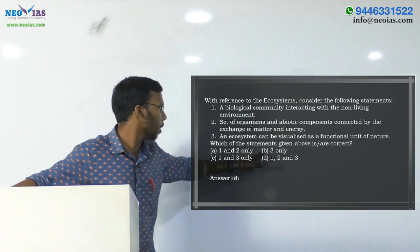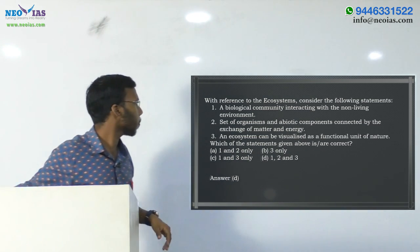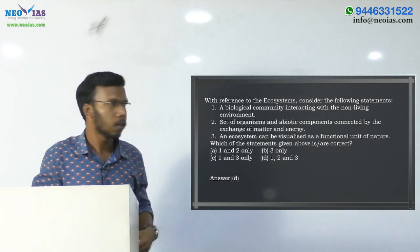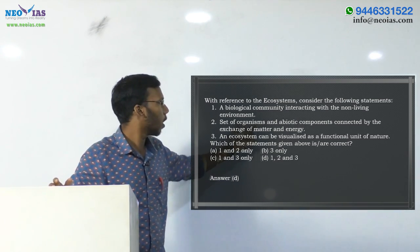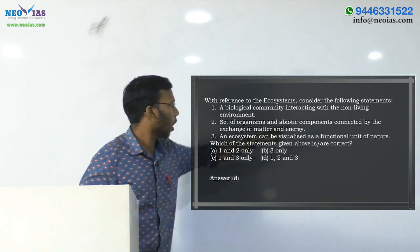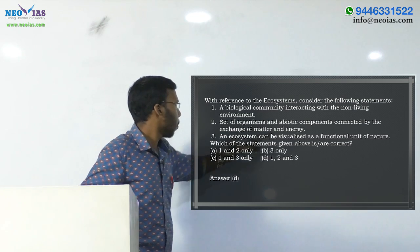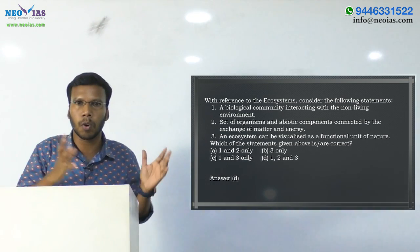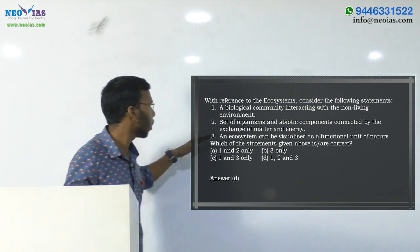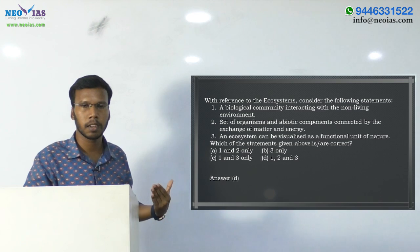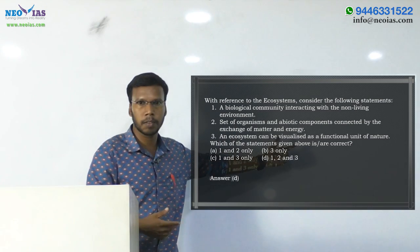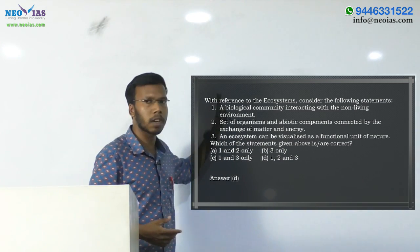Statement 2: a set of organisms and abiotic components connected by the exchange of matter and energy. A set of organisms means living organisms, and abiotic components means non-living components or the environment. Connected means the interaction by the exchange of matter and energy. The interaction of living organisms with their environment is for matter and energy — for their survival. That is why the second statement is also correct. The interaction is for their sustenance, for matter and energy, for their food.